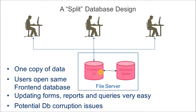Moving up in complexity again, we move to our split database design. Here I've put both the front-end and back-end databases on a file server, with multiple users all having shortcuts pointing to the same front-end. The front-end points to the back-end database with the tables. The problems with this arrangement are similar to the previous one — multiple users logging into the same front-end database creates potential corruption issues. Machine problems or network issues in the middle of an operation can lock it up, corrupt it, and kill it. You'll have to replace that front-end copy to get it fixed.